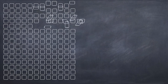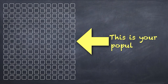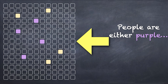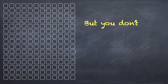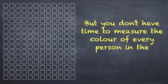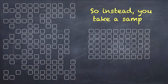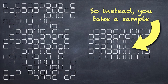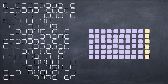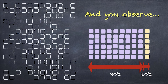Imagine that you have a research question about a certain population. The people in your population are either purple or yellow, and you want to know what proportion of the people are purple. But you don't have the time to measure the color of every single person. So instead, you take a sample of the population and determine the color of those people, hoping that what you observe will be representative of what's happening in the wider population. You observe that 90% of the people in your sample are purple and 10% are yellow.